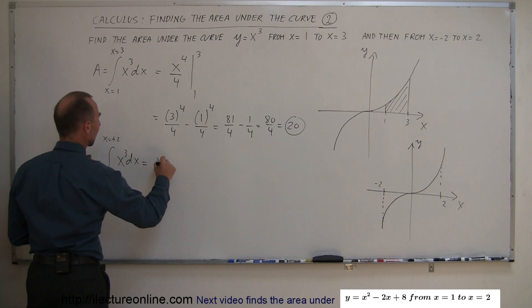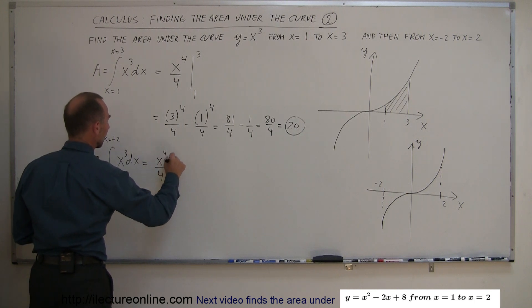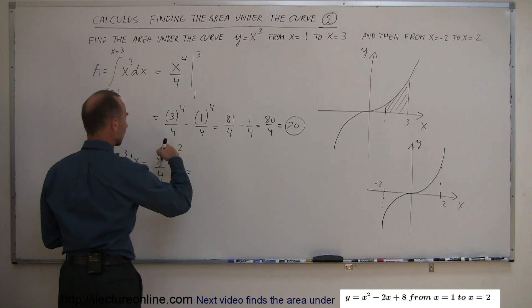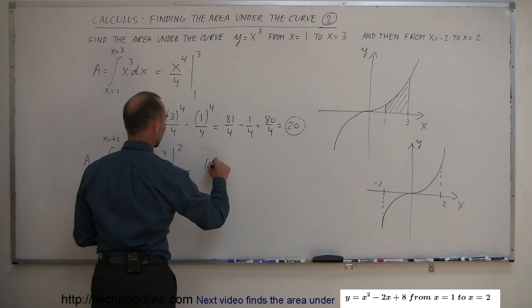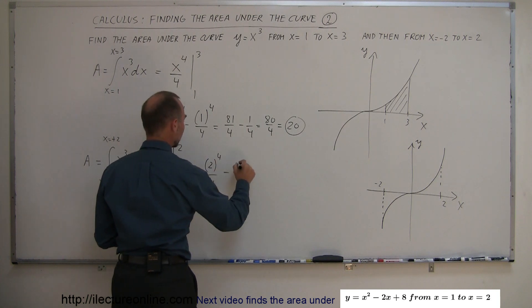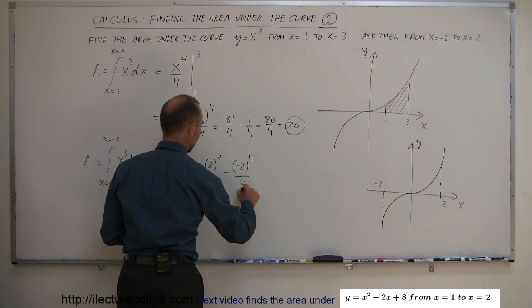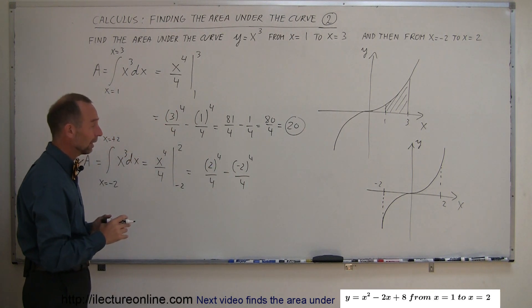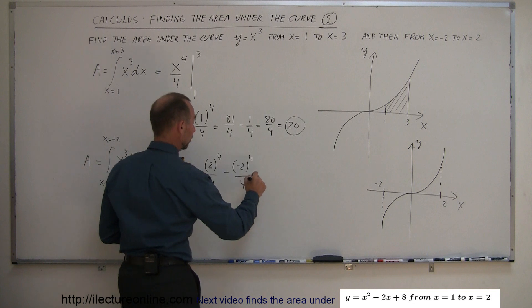When we integrate that we get x to the fourth over 4 and we're going to evaluate it from minus 2 to 2. First we plug in the upper limit so we get 2 to the fourth power over 4 minus, plug in the lower limit which is minus 2 to the fourth power over 4. Since they are raised to the fourth power, that's an even power, the negative sign doesn't matter.